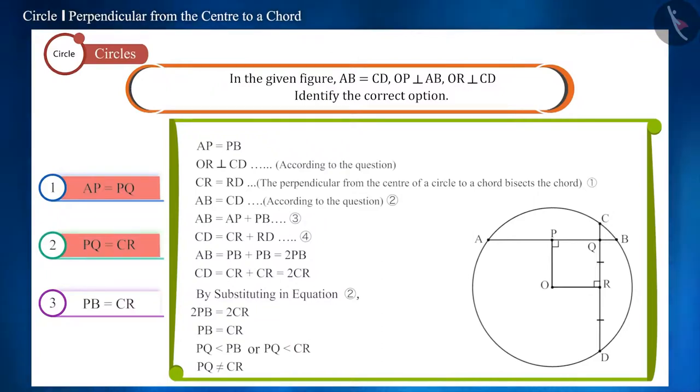Pay attention here. We get that PB is equal to CR, and this is our third option. That is, our third option is correct.